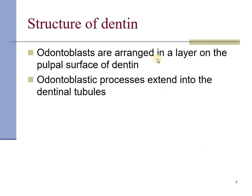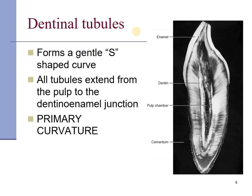The odontoblasts are arranged in a layer close to the pulpal surface of the dentine. These odontoblastic processes extend within the dentinal tubule. As age advances, these odontoblasts tend to converge towards the pulp, giving rise to a multilayered appearance. The dentinal tubules have a characteristic S-shape, called the primary curvature of the dentine.